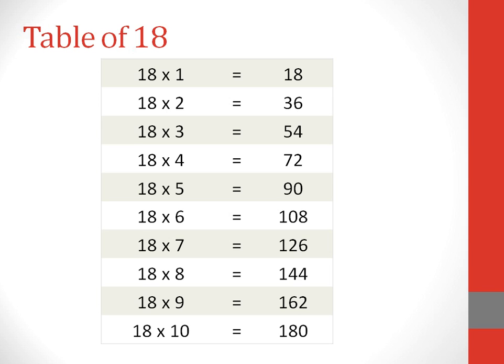Table of 18. 18 ones are 18. 18 twos are 36. 18 threes are 54. 18 fours are 72. 18 fives are 90.